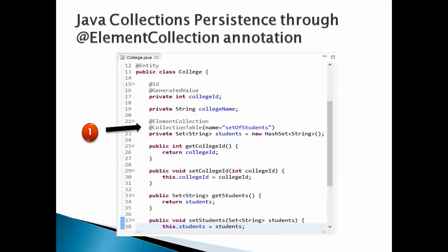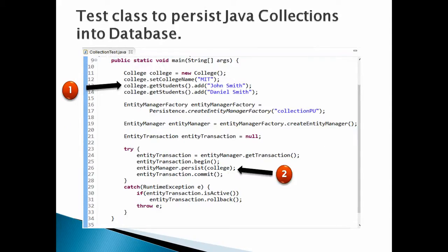Let's create a test class to persist Java collections into the database, and discuss the code point by point. Number one: create a college instance, set the college name to MIT, and set two students in the set of students property — John Smith and Daniel Smith. Number two: call the persist method of the entity manager to persist the college instance. This will create a table college, and through the @ElementCollection annotation it will create the set of students table to hold the set of students in the college.